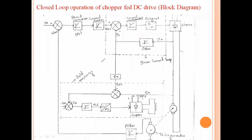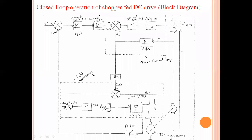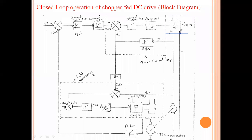This is the closed-loop block diagram of a Chopper-Fed DC drive. You can see the Chopper circuit here. This Chopper circuit will give the average voltage or RMS voltage across the two motor terminals. Due to this voltage, the motor starts rotating from zero speed up to the base speed.